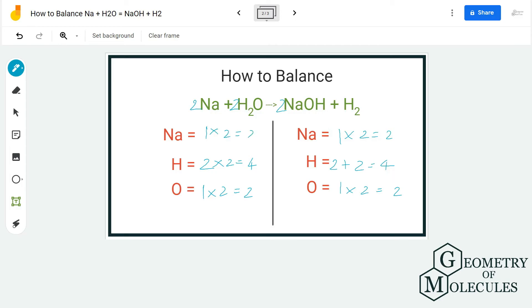And hence now this equation is balanced, in which the final reaction that we are getting is 2Na plus 2H2O on the reactant side, 2NaOH plus H2 on the product side.